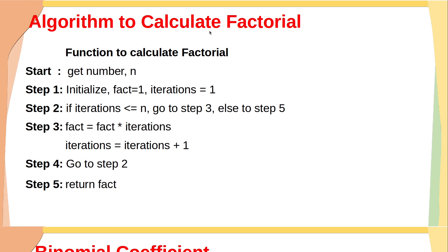Let's see the algorithm to calculate factorial of a number. The function will receive a number n and compute factorial of n. In step 1, we initialize two variables: fact equal to 1 and number of iterations equal to 1. In step 2, we check whether number of iterations is less than or equal to n. If true, go to step 3; otherwise go to step 5.